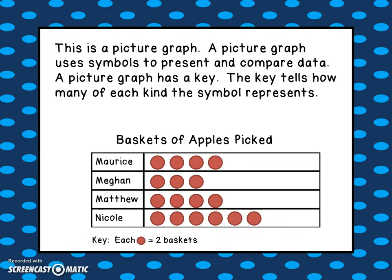Nicole was very busy — she has six circles. Each circle represents two baskets, so in reality Nicole picked 12 baskets of apples.